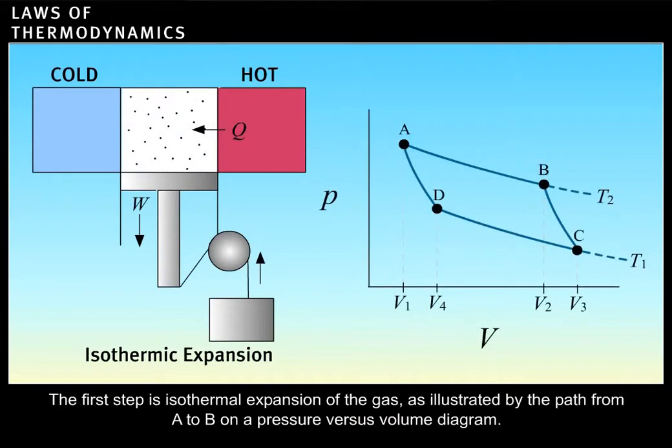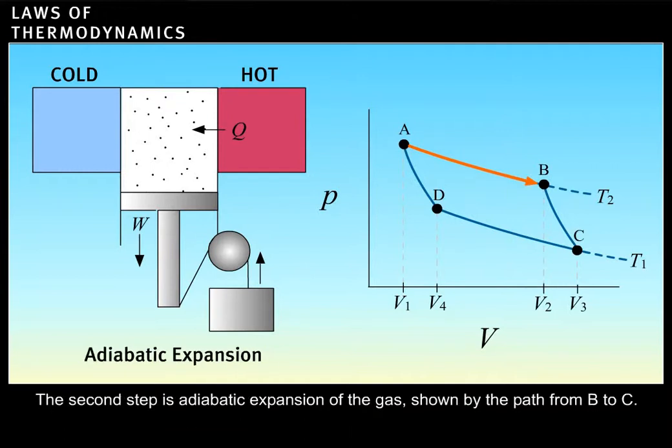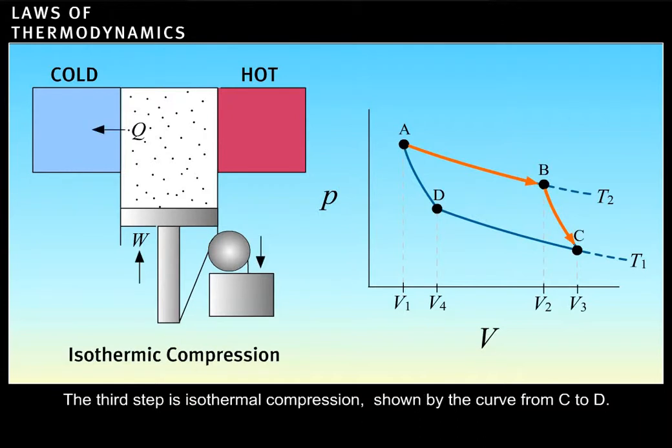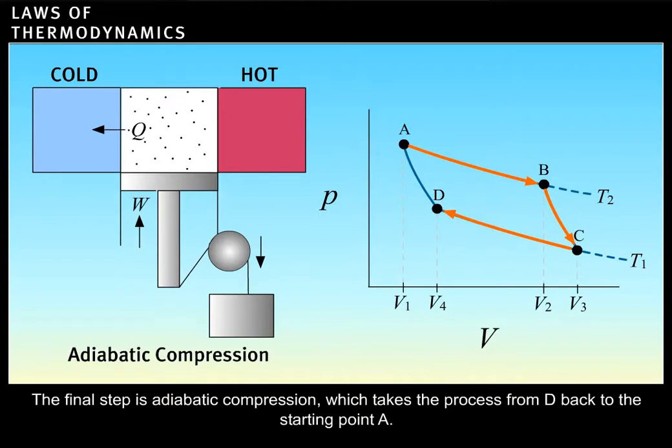The first step is isothermal expansion of the gas, as illustrated by the path from A to B on a pressure versus volume diagram. The second step is adiabatic expansion of the gas, shown by the path from B to C. The third step is isothermal compression, shown by the curve from C to D. The final step is adiabatic compression, which takes the process from D back to the starting point A.